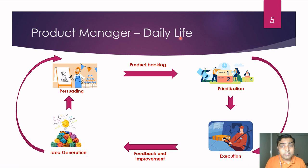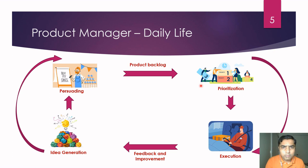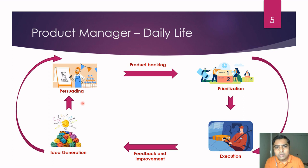Here we have the daily life of a product manager. It starts with idea generation — we always keep thinking about ideas coming from multiple sources as discussed. When we have hundreds of ideas, we can't immediately assign them to development teams. Before that, we go through a feasibility check: talking with architects, assessing complexities, checking who will benefit. We prepare a business plan and business case, present it to leadership with our idea, target audience, who benefits, and the revenue plan. Once accepted by the board and leadership, we move to the product backlog.